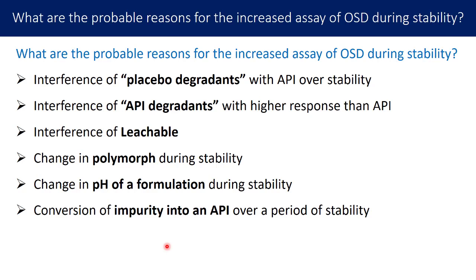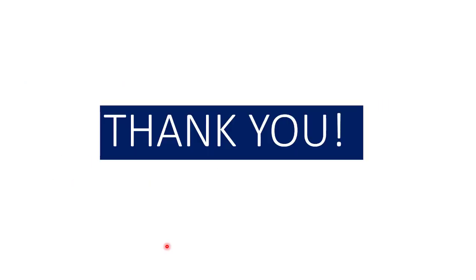The last reason is conversion of an impurity into API over the stability period — a very thin possibility but one that cannot be neglected. These are the probable reasons for increased assay of oral solid dosage forms during stability, and some reasons may apply to other dosage forms as well. If you have additional probable reasons for incremental assay values, please let me know in the comments below.